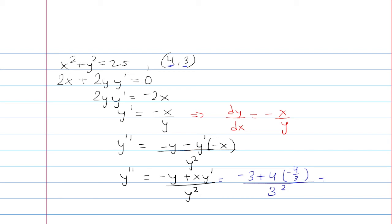So we just have to simplify this. If I multiply top and bottom by 3, 3 times negative 3 is negative 9. This 3 is going to cancel with this 3.